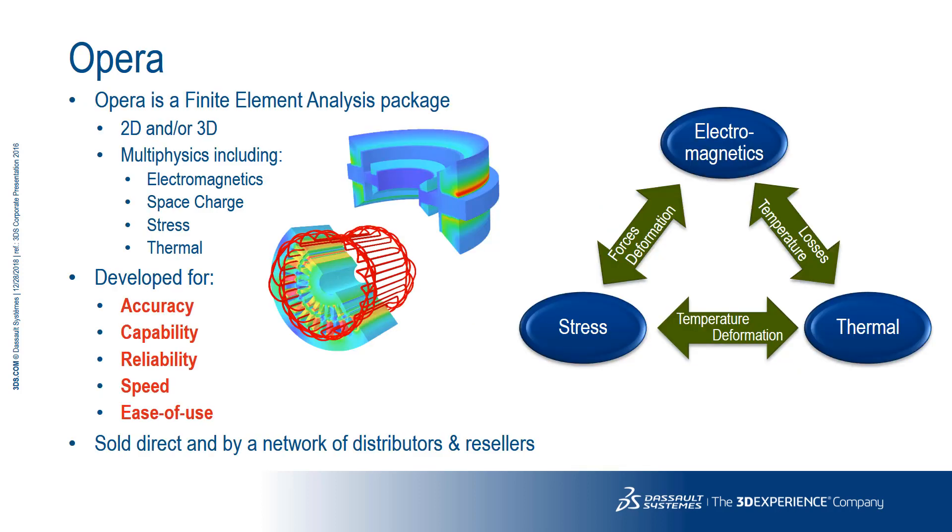Opera is finite element analysis software available for problems in two or three dimensions. It's capable of multi-physics analyses with stress and thermal solvers available, as well as the main function of electromagnetics. It's been in use for electrical machine design for three decades. In this presentation, we'll take a quick look at its capabilities as applied to the design of electrical machines.